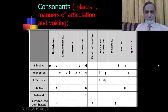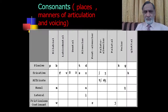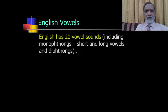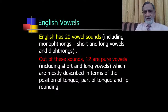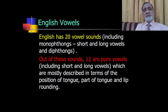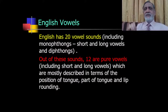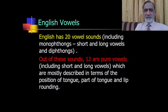As already mentioned, English has 20 vowel sounds, including monophthongs — short and long vowels — and diphthongs. These 20 vowel sounds can be further categorized. Out of these, 12 are pure vowels, including short and long vowels, which are mostly described in terms of the position of the tongue, the part of the tongue, and lip rounding.